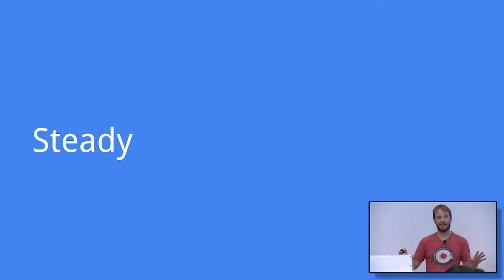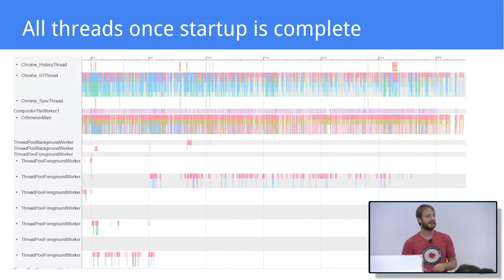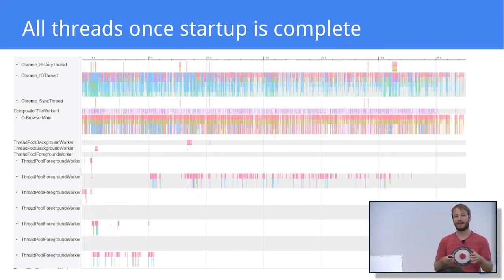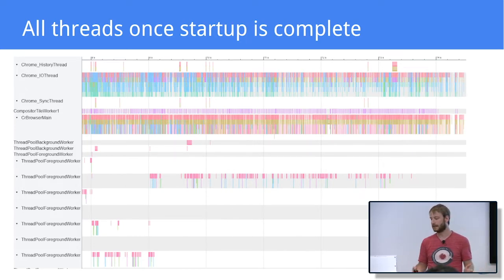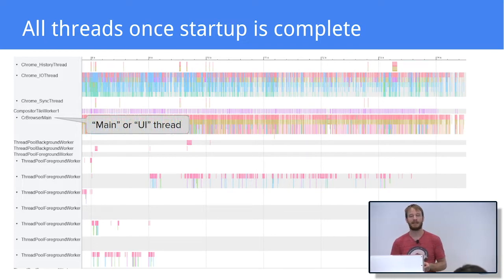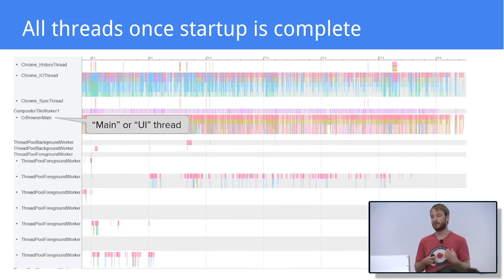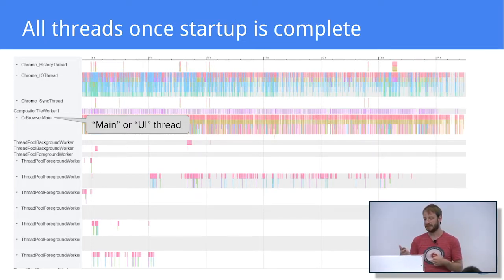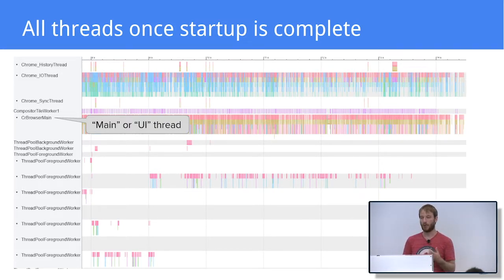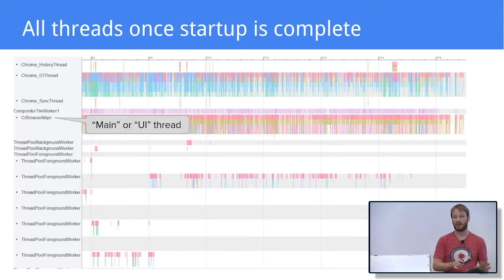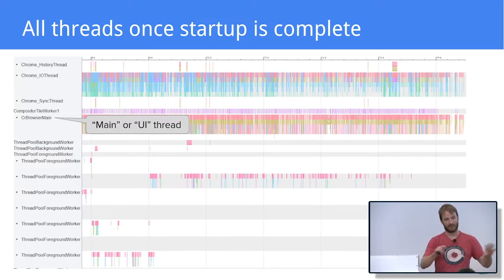Now it's time to look at steady execution of Chrome. This is a trace showing the threads that exist in the browser process when Chrome runs in a steady state. Perhaps the most important one is the main thread, which we also call the UI thread. Any modification to the UI needs to be performed on that thread. Other things that need to happen on that thread include any access to the profile class, reading user preferences, starting navigation, and accessing methods of the web contents class — the interface we have to control a tab. All of that needs to happen on the main thread because there are no locks protecting that state, so we need to do everything from the same thread to avoid data races.